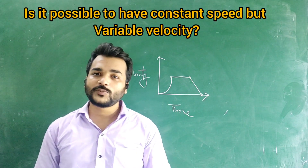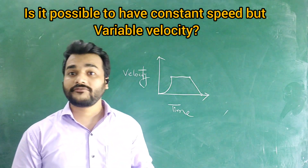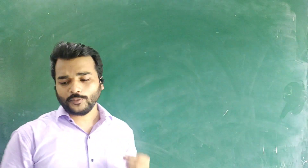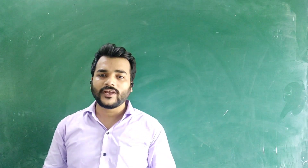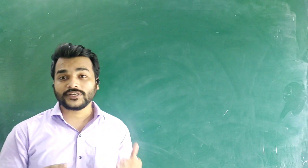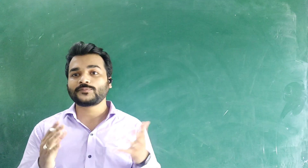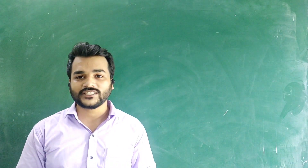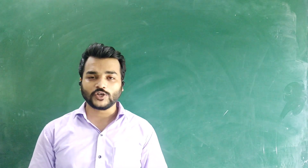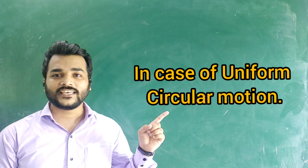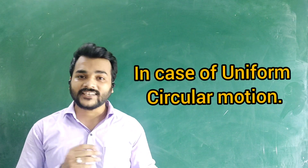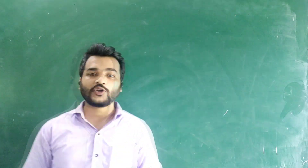The next question is: is it possible to have constant speed but variable velocity? We studied one condition where speed is constant but velocity is variable. The answer is yes, it is possible. In case of uniform circular motion, we can have constant speed but variable velocity.